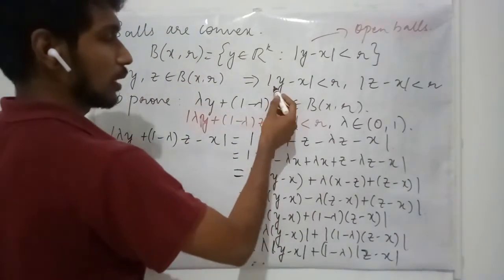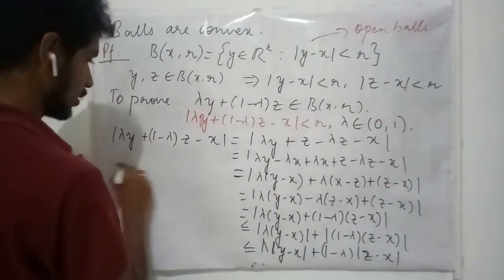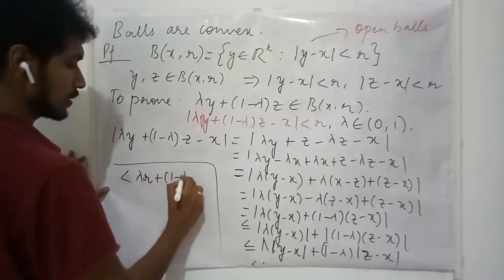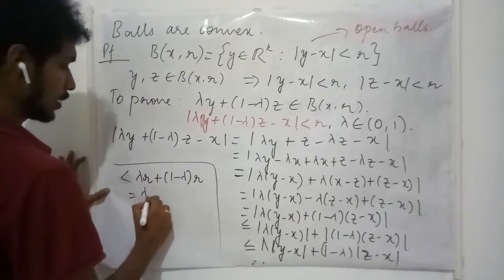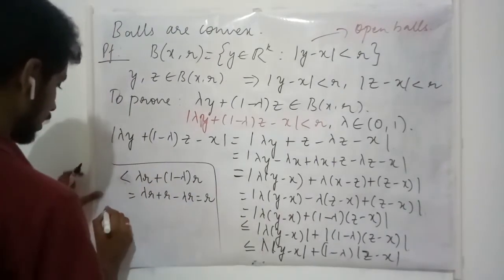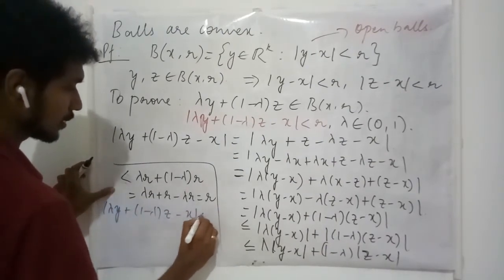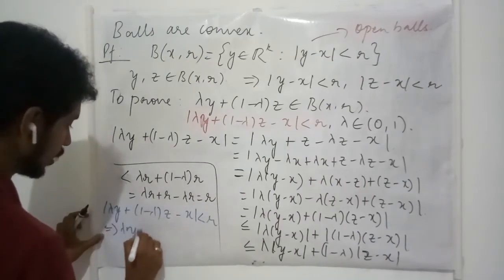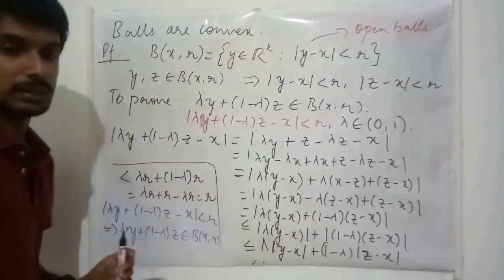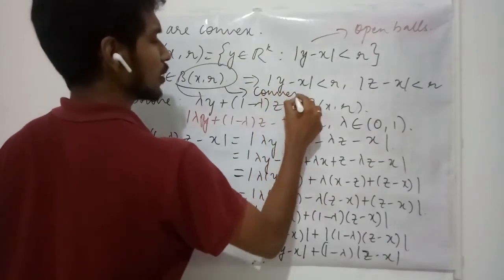Since the absolute value of y minus x is less than r and the absolute value of z minus x is less than r, this is strictly less than lambda times r plus 1 minus lambda times r, which equals r. So finally, the absolute value of lambda y plus 1 minus lambda z minus x is less than r. This tells you lambda y plus 1 minus lambda z is a member of this ball, and this proves that the ball is a convex set.